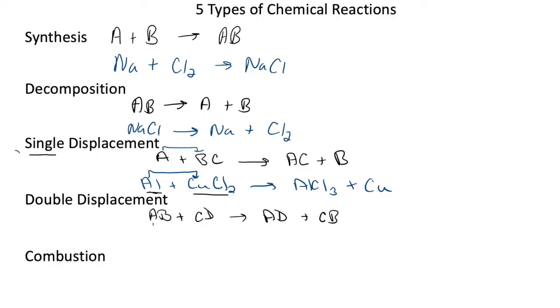A, which is the metal in the first compound, will form a new compound with the non-metal in the second compound, which is AD. And the non-metal in the first compound will rearrange with the metal in the second compound to form a new compound, CB.